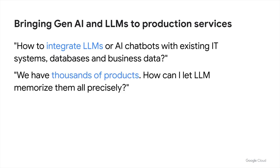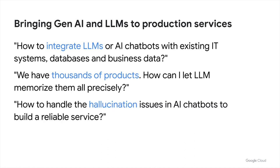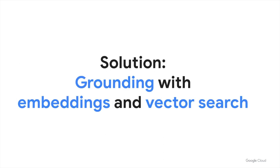We have thousands of products — how can I let an LLM memorize them all precisely? Or, how to handle the hallucination issues in AI chatbots to build a reliable service. Here is a quick solution: grounding with embeddings and vector search. In this video, we will learn these crucial concepts to build reliable Gen AI services for enterprise use.